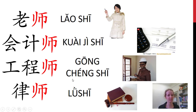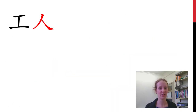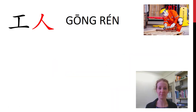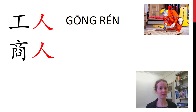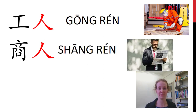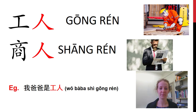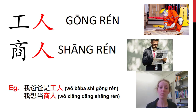You try. 这是什么? 这是工人. So this is anyone that does manual labor — it could be a trades person. 这是什么? 这是商人. 商 meaning business, so it's a business person. 商人. For example: 我爸爸是工人. 我想当商人 — I would like to be a business person.